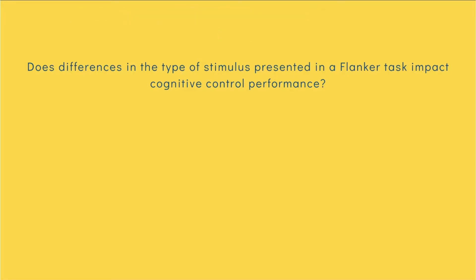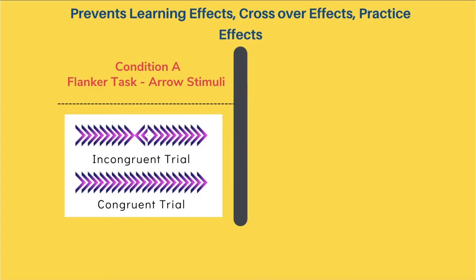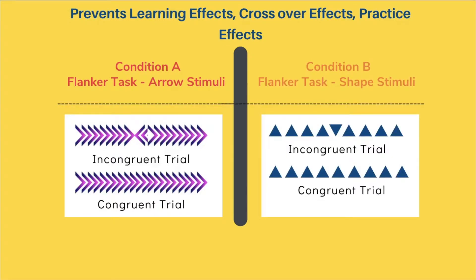Imagine we want to study if differences in the type of stimulus presented in a cognitive paradigm called the Flanker task impacts one's cognitive control performance. In condition A, you present participants with arrow stimuli, and in condition B, you present participants with shape stimuli such as triangles. This is done across both congruent and incongruent trials. Now imagine a situation where, unlike the between-subjects design, the same participant is recruited to perform in both conditions A and B.